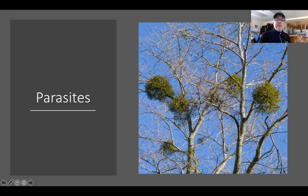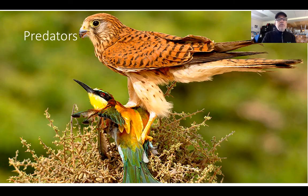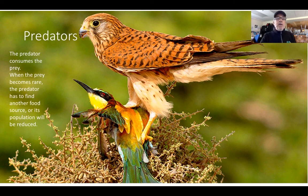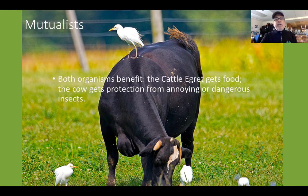Here's a parasite: this mistletoe plant puts its roots into the tree's bark and sucks out water and nutrients, but doesn't kill the tree — though think about what effect it might have. Predators: this falcon is about to consume this bee-eater, a beautiful family of old-world birds. When prey becomes rare, the predator must find another food source or its population will decline — so predators have an interest in maintaining a good-sized prey population. Here are some mutualists: the cattle egret and the cow. The egret eats insects, which benefits the cow, and the cow gets protection from annoying and perhaps dangerous insects.